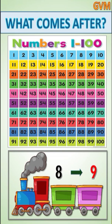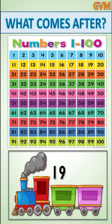The next example is number 19. Children, what is the next number of 19? First of all we will find number 19 in the number chart. Number 19 is here, and the next number of 19 is 20. Children, the next number of 19 is 20. So 20 is the right answer, and here is written number 20.